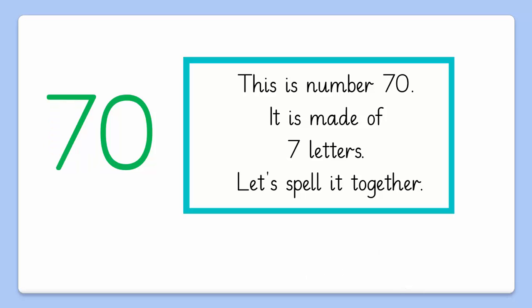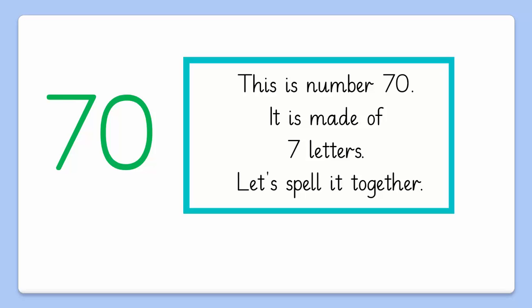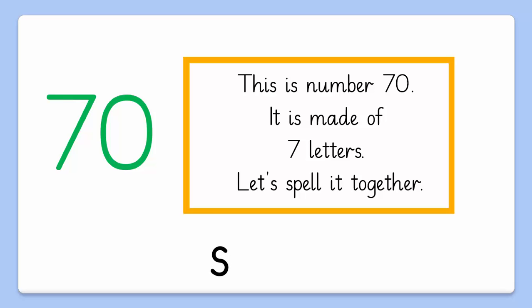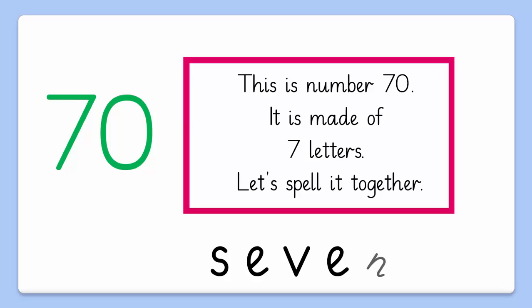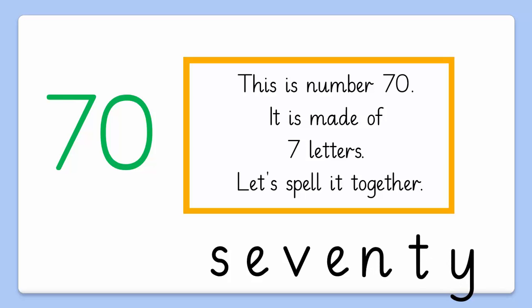Moving on. Now we have number 70. It is made of 7 letters. Wow! What a coincidence — 70 has 7 letters! So let's spell them together: S, E, V, E, N, T, Y — 70.